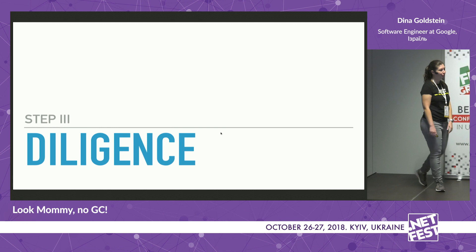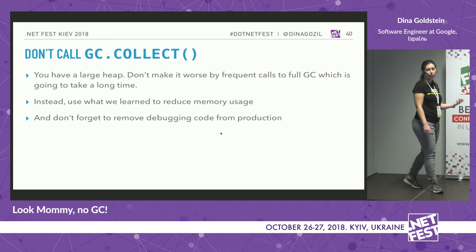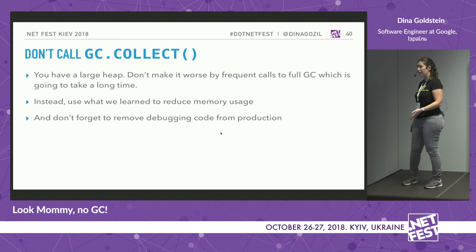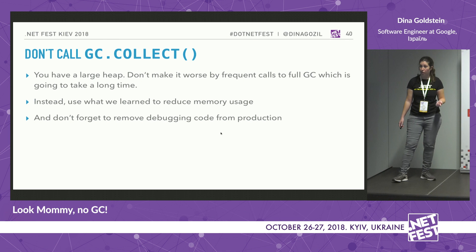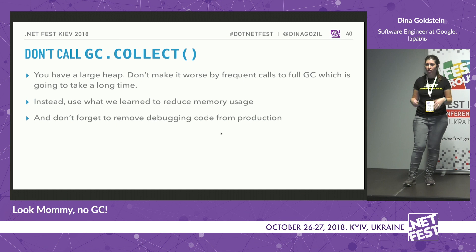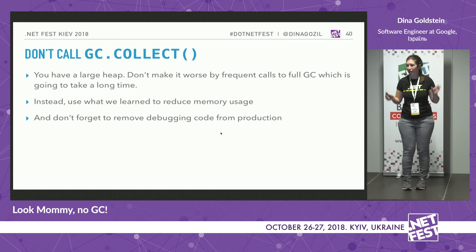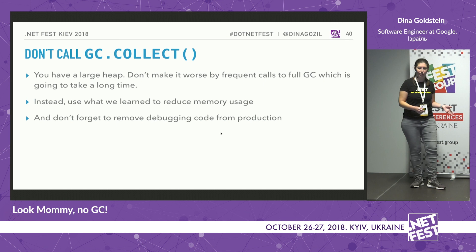In the time we have left, let me give some general advice. First: don't call GC.Collect. If you're having memory problems and decide to call GC.Collect — think about it: you have a lot of memory allocated, which means GC is going to take a long time. So you call GC and just make things worse. Trust the .NET team — they call GC when it needs to be called. I'm not saying never in 100 years, but as a general rule, if you have a problem, don't solve it by calling GC.Collect.